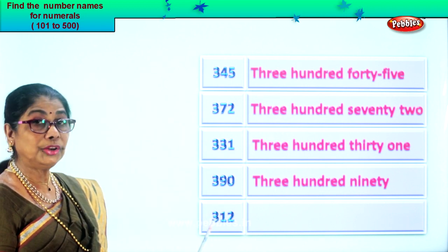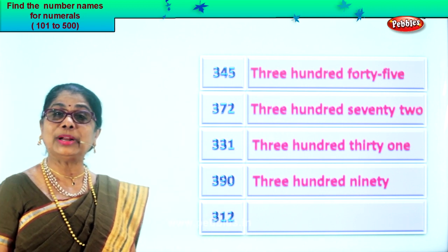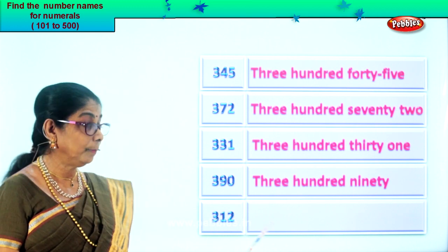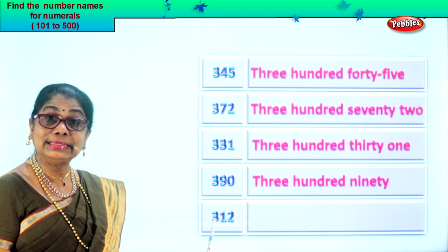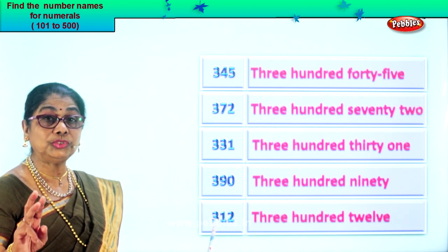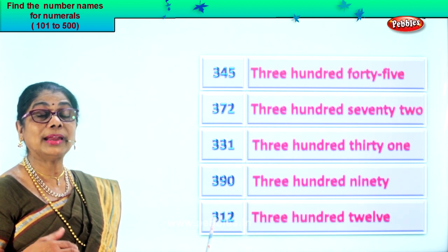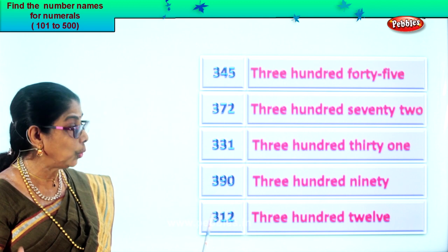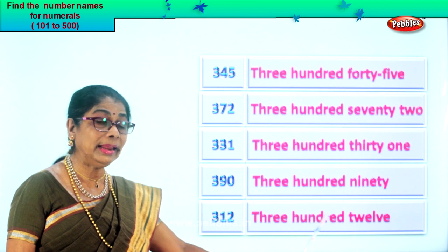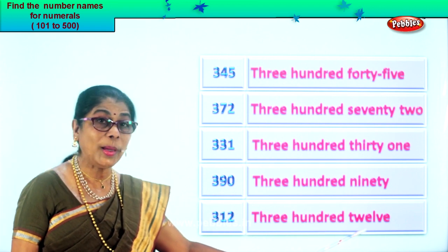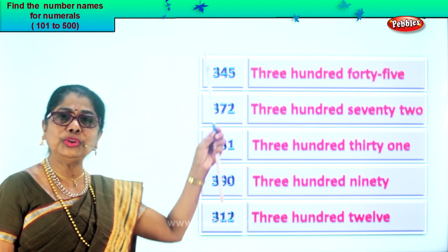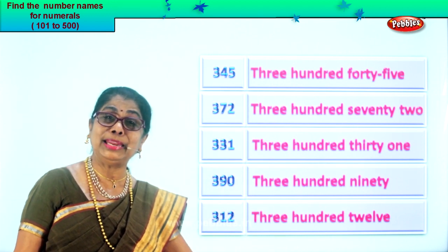Let's look at our last numeral. You have two in the ones place, one in the tens, and three in the hundreds place — that is three hundred twelve. So first you write three, then you write hundred, then you write twelve. Three hundred, next twelve. Read: three hundred twelve. For all the numerals, you wrote the number names correctly.